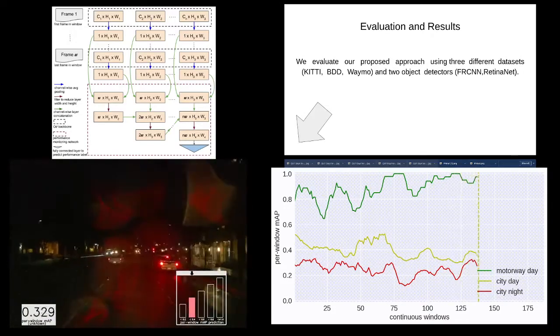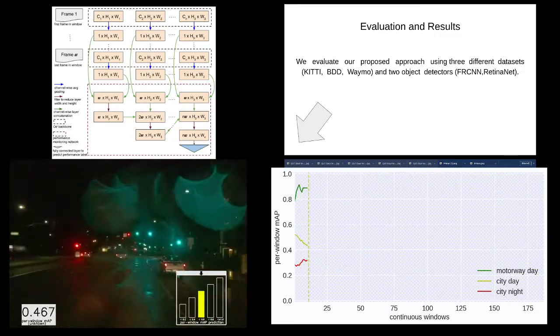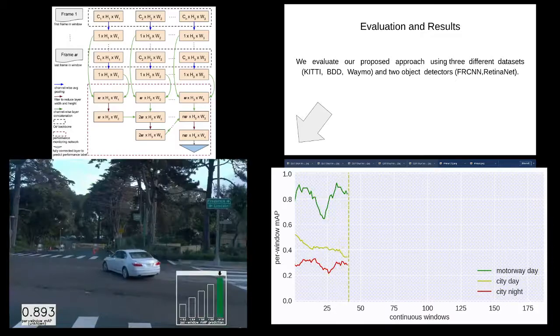To evaluate the proposed approach, we have used three different datasets: KITTI, BDD, and Waymo, and two object detection networks: Faster RCNN and RetinaNet.